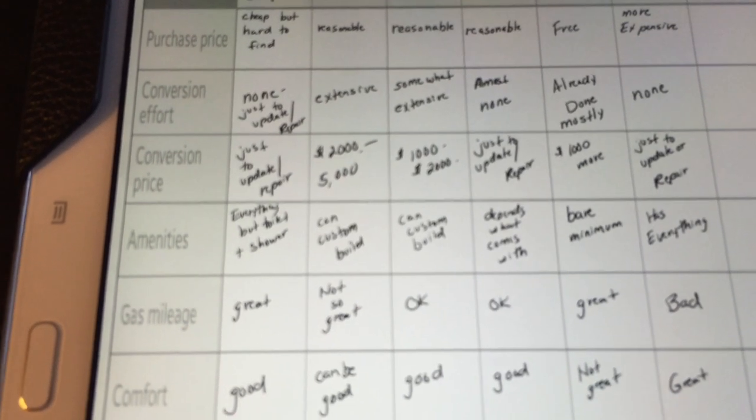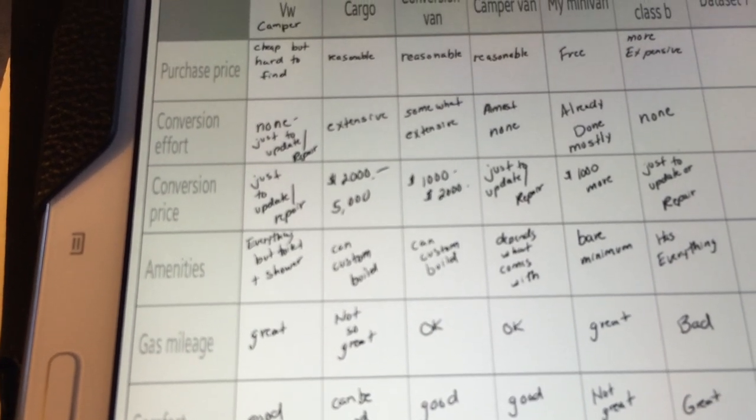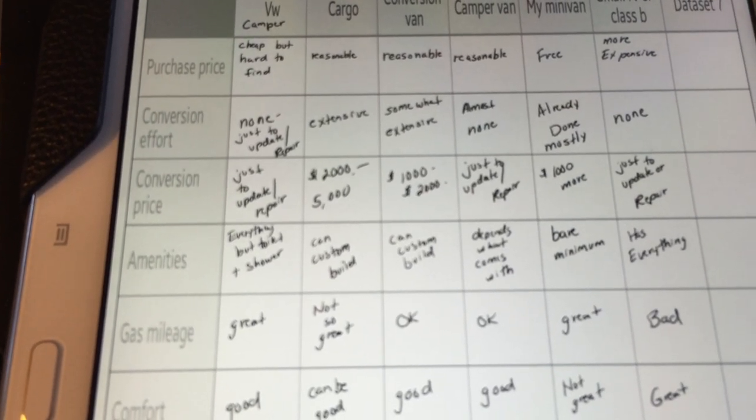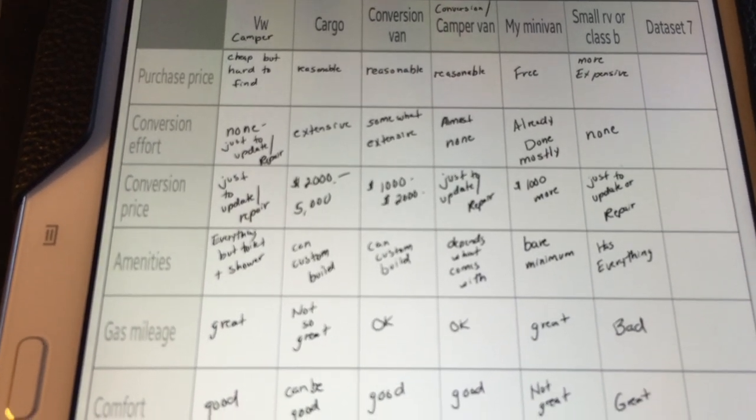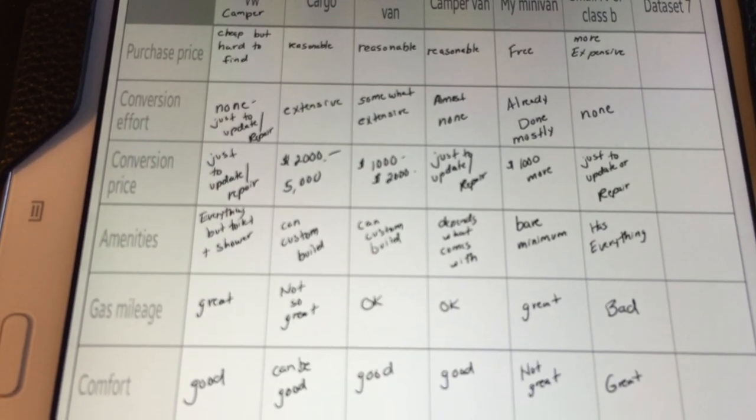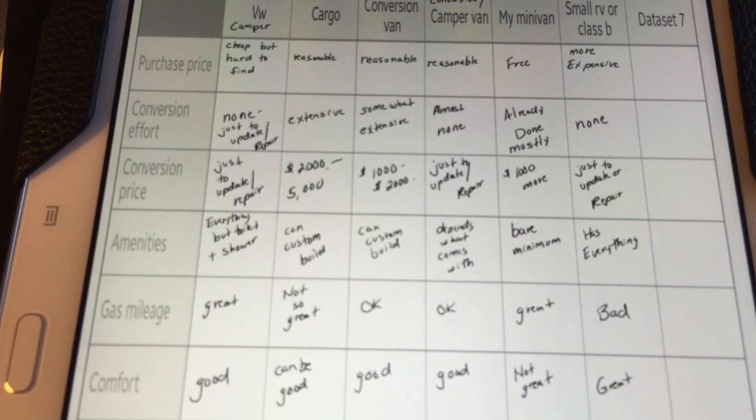Amenities, I'll read that one. The Volkswagen, everything but toilet and shower. Conversion van, a cargo van you can custom build. Same with the conversion. And the conversion camper depends on what it comes with. My minivan has bare minimum amenities.